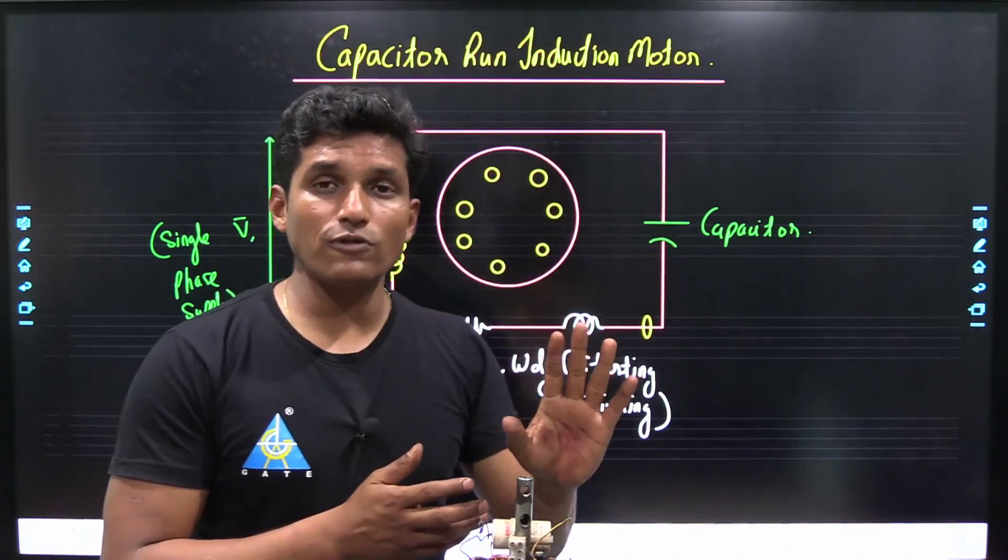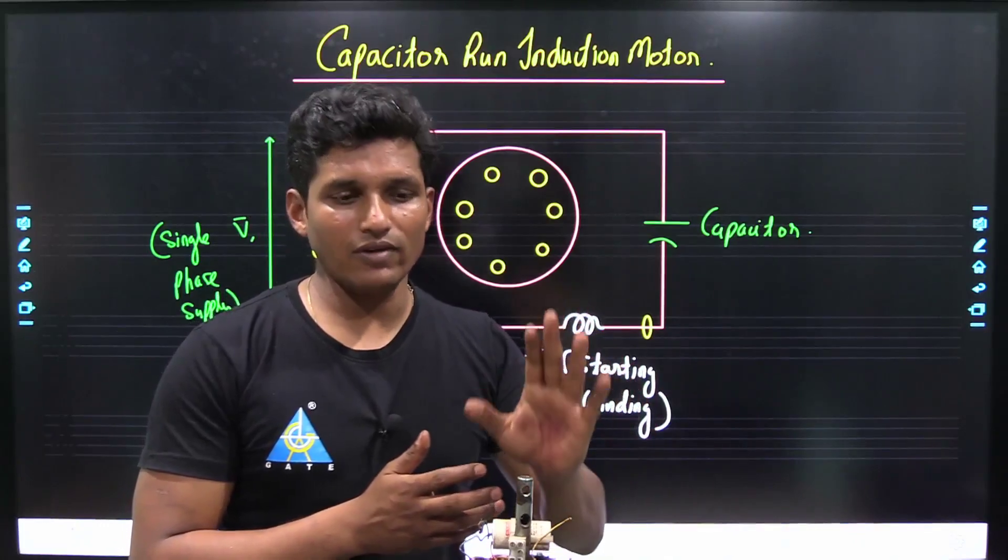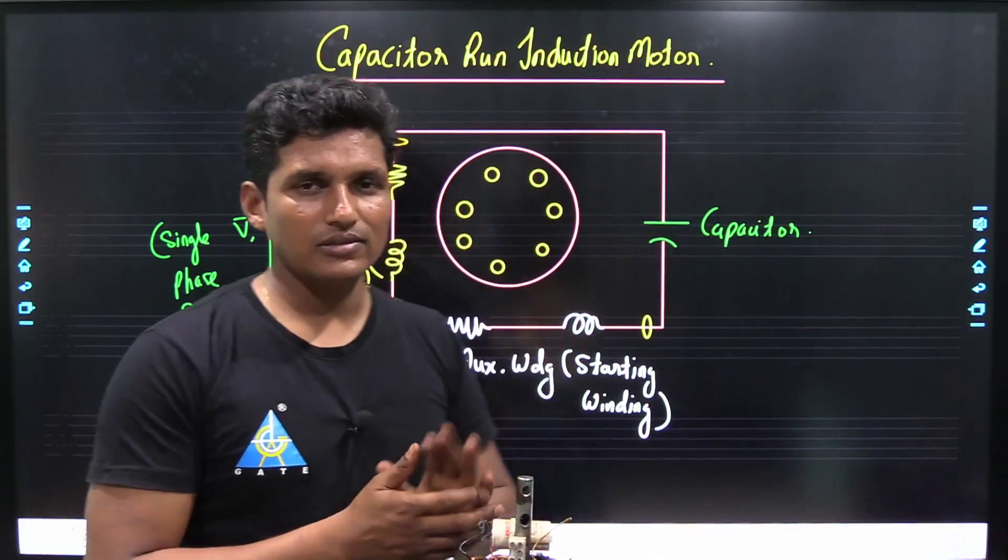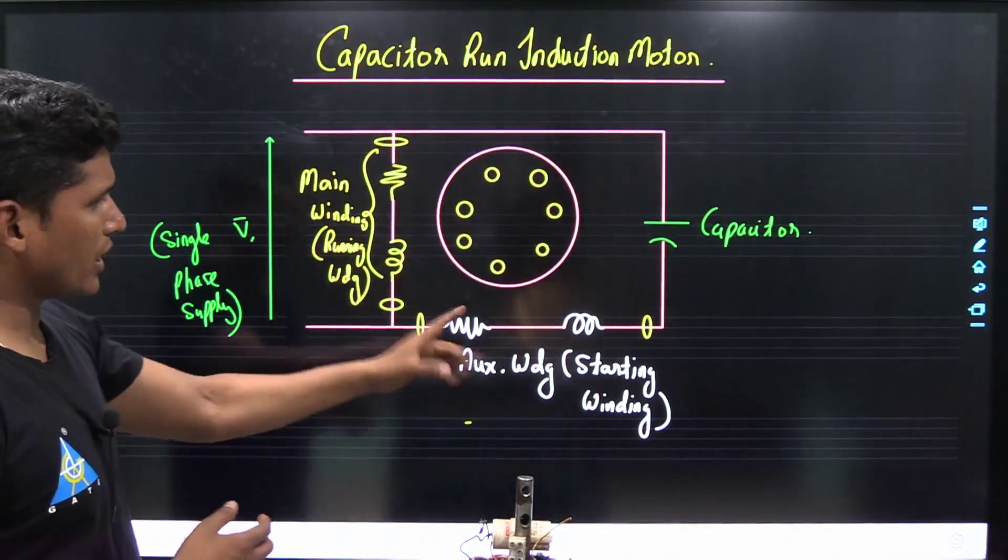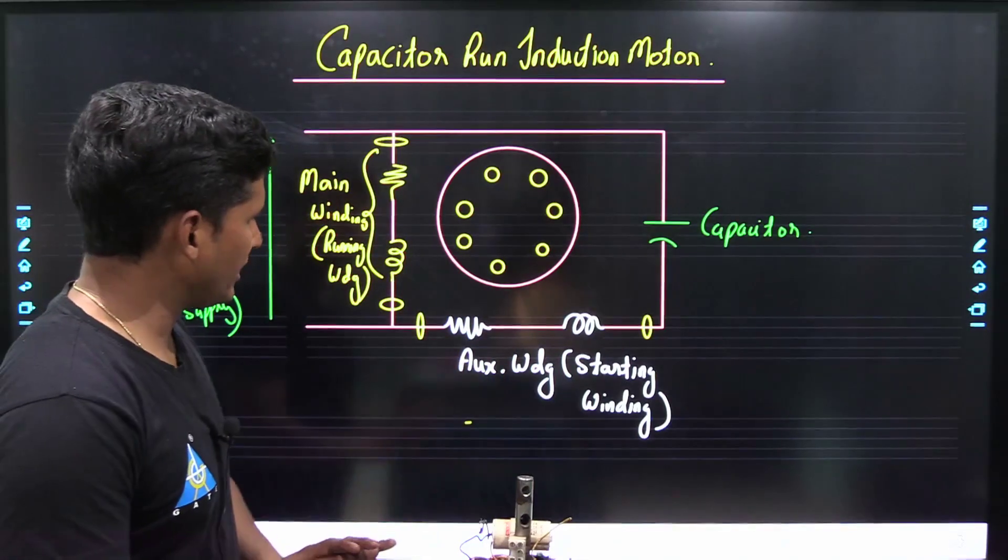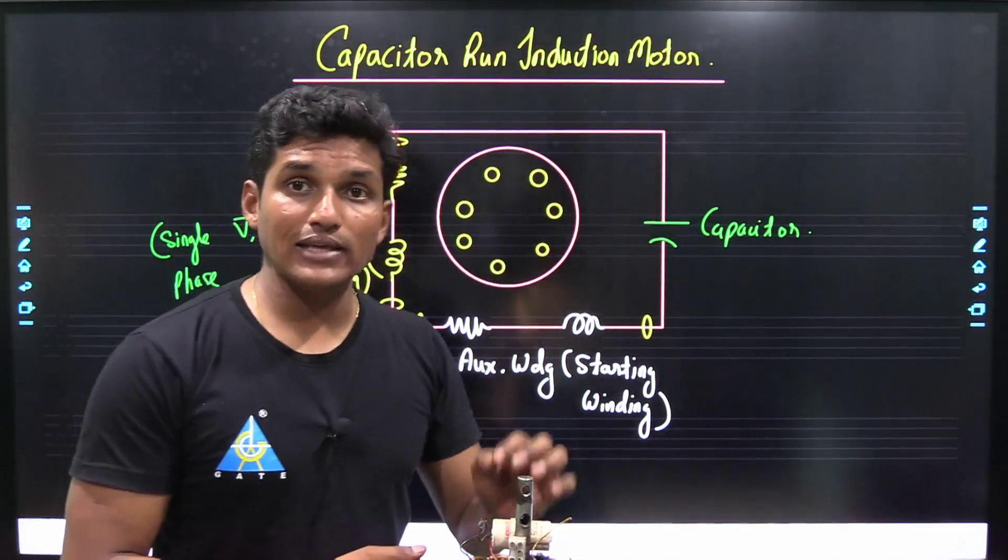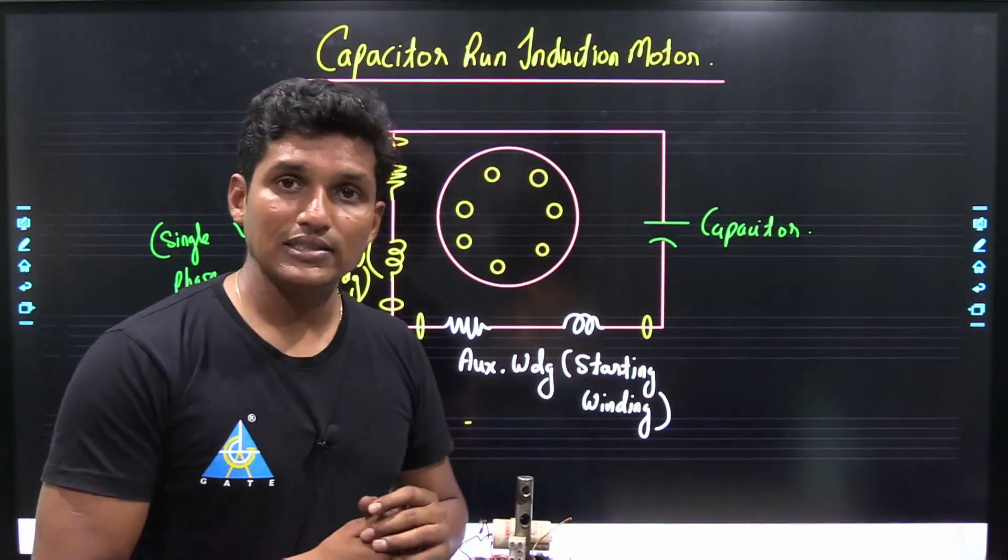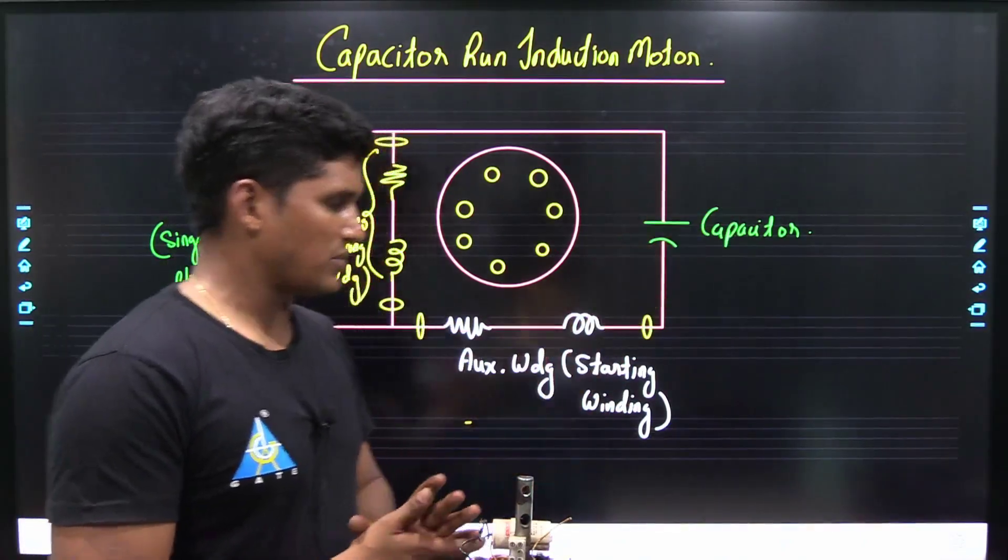There is no use of centrifugal switch in our motor in ceiling fan. There are two types of winding: main winding and auxiliary winding. Main winding is also known as running winding and auxiliary winding is also known as starting winding, and there is a capacitor.